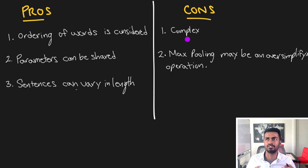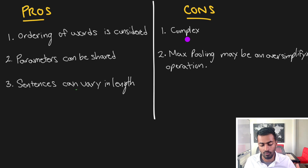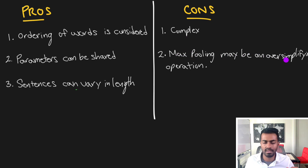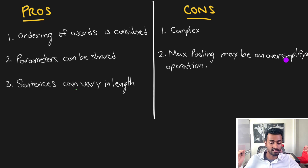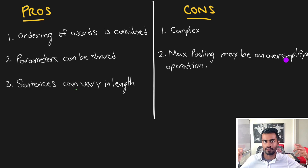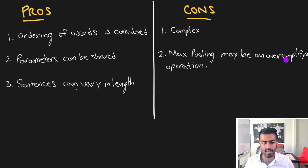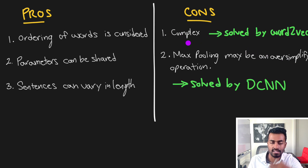The cons, however, are that it can be a pretty complex operation, especially if you're just trying to understand or learn the word embeddings. Also, the max pooling may be a very oversimplifying operation, especially since we're only grabbing one activation within a large sequence — but within a large sequence there could have been multiple activations that would have been very strong, and we might be missing out on some signals.